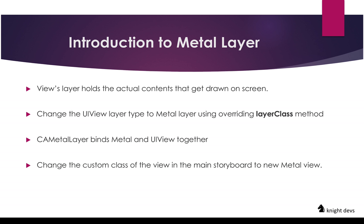The first concept is Metal Layer. In an iOS app, a view's layer holds the actual content drawn on the screen — whatever you draw on that layer is shown on screen. For Metal, you have to change the UIView layer to a Metal layer whenever you create a Metal app. You do this by overriding the layer class. CAMetalLayer binds Metal and UIView together. In your storyboard, you have a UIView and you have to bind that view to your Metal view class which you will create while coding.